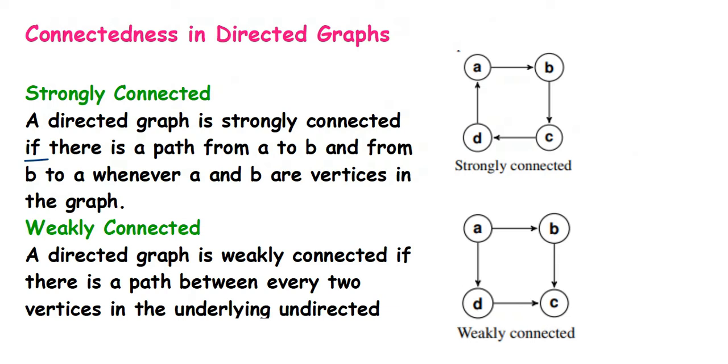A directed graph is strongly connected if there's a path from a to b and from b to a, whenever a and b are vertices in the graph.